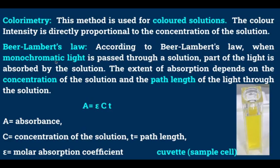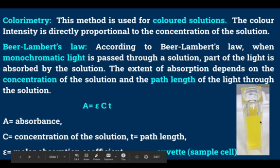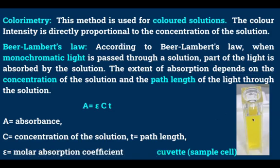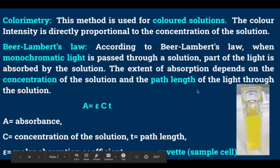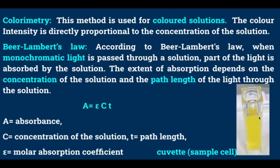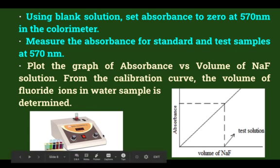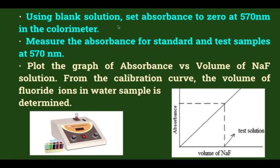Monochromatic light means light of a single wavelength. When monochromatic light is passed through a solution, part of the light is absorbed and the remaining part is transmitted. The extent of absorption depends upon the concentration and path length. Path length is constant because we use the same cuvette for all solutions. This is the colorimeter instrument. First, using the blank solution, set the absorbance to 0 at 570 nanometers in the colorimeter. The wavelength used for this experiment is 570 nanometers. Using the knob, set the wavelength to 570 nm, then place the blank solution in the sample cell and adjust the absorbance to 0.